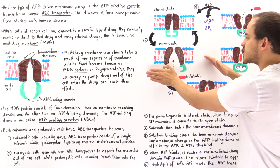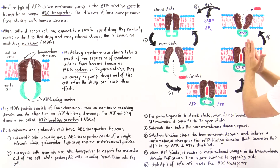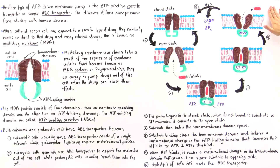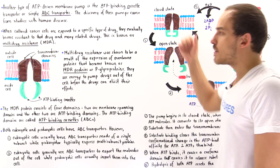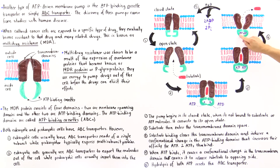So if the substrate molecule came in from the inside of the cell, it now opens from the outside, and the substrate molecule can leave and exit the cell. The ultimate result of this mechanism is the same as in the P-type ATPases: these molecules are moved across the membrane against their electrochemical gradient.